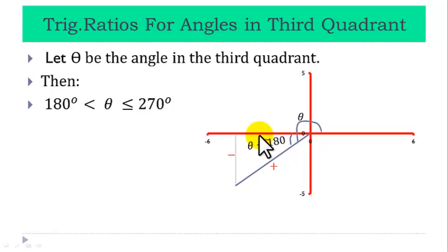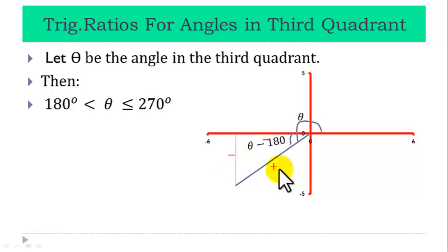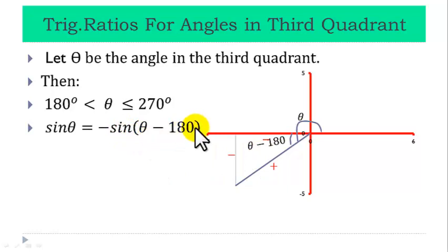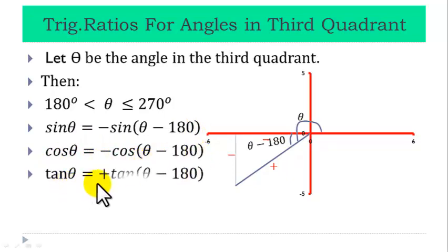We are now ready to find the trig ratios for theta degrees, which is equivalent to finding the trig ratio for theta minus 180 degrees. Sine is opposite over hypotenuse: minus over plus is minus. Cos is adjacent over hypotenuse: minus over plus is minus. And tan is opposite over adjacent: minus over minus is plus. So it is only tan that is positive in the third quadrant. Sin theta equals minus sin of (theta minus 180). Cos theta equals minus cos of (theta minus 180). And tan theta equals plus tan of (theta minus 180).